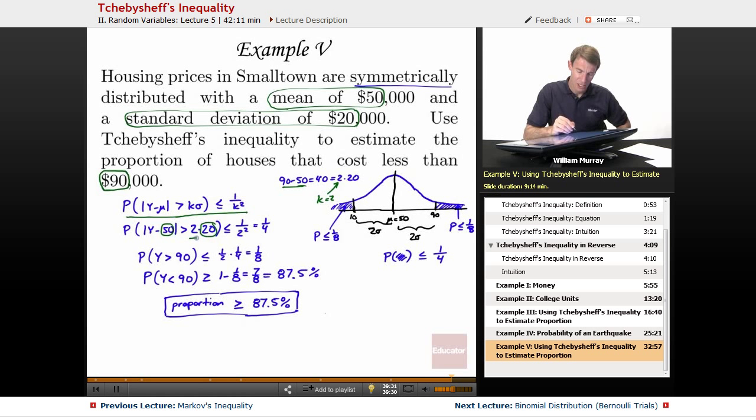So I plug that in to Chebyshev's inequality. And I get that the probability is less than 1 fourth. That's the probability of being two standard deviations away from the mean in either direction. So that includes both of these regions here, both the high region and the low region. But I'm really only interested in how many of the houses are costing too much on the high side. So I'm going to cut that region in half and get a probability of less than 1 eighth. So that's why that is less than 1 eighth. Less than 1 eighth.